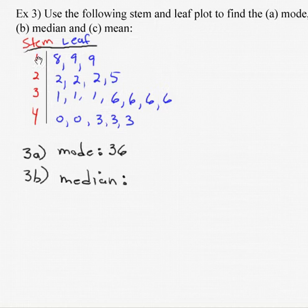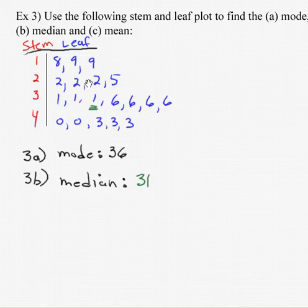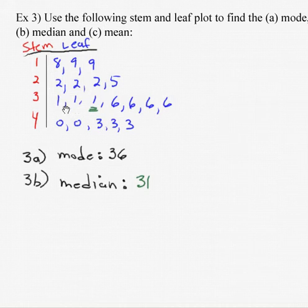The median score is the score in the middle. We've got 1, 2, 3, 4, 5, 6, 7, 8, 9, 10, 11, 12, 13, 14, 15, 16, 17, 18, 19 scores. We're looking for the score in the middle. That would be the 10th score. How do we know that's in the middle? Well, we've got nine scores in front of it and nine scores after it. So that would be 31.